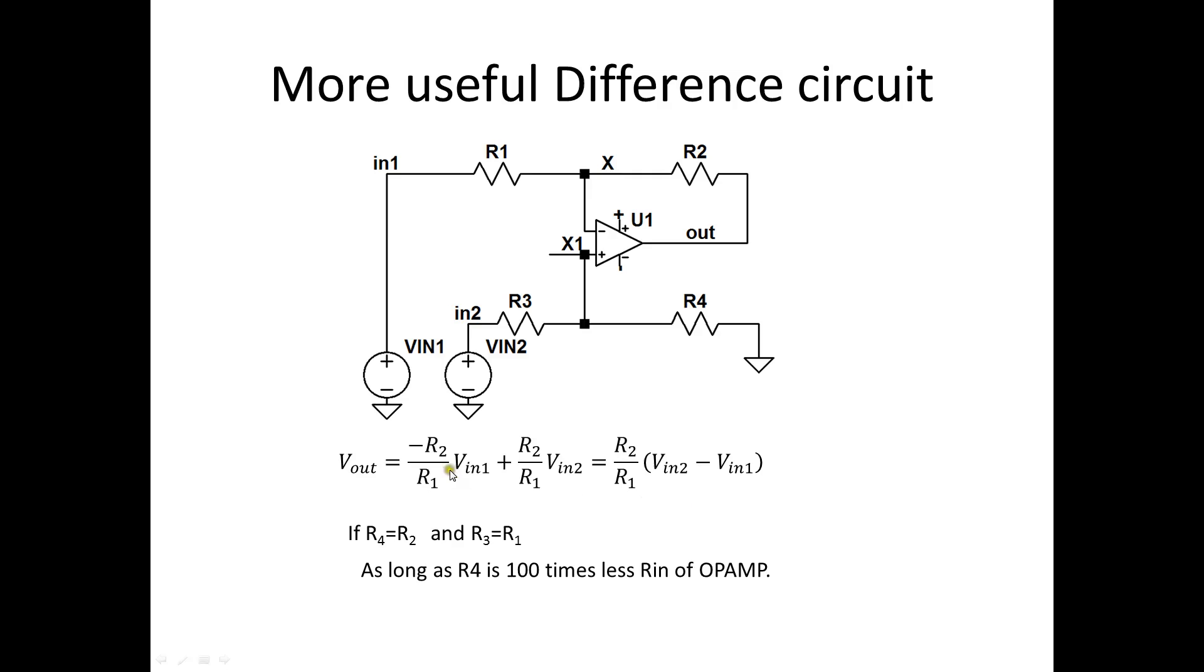Well, when we sum these together, we get a constant gain times the difference of these two circuits. We have to make sure R4 equals R2 and that R3 equals R1. And also, as long as this resistance is 100 times less than the Rin of the op amp.